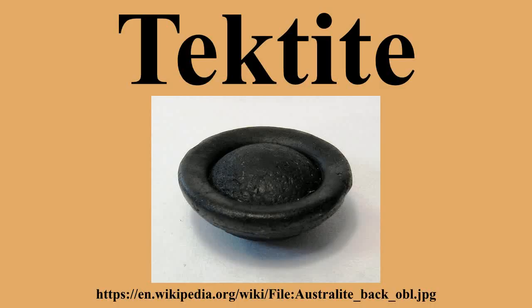The fourth group of tektites — microtektites — are tektites that are less than 1 mm in size. They exhibit a variety of shapes ranging from spherical to dumbbell, disc, oval, and teardrop. The color of microtektites ranges from colorless and transparent to yellowish and pale brown. They frequently contain bubbles and lechatelierite inclusions.